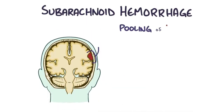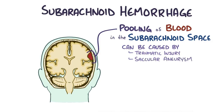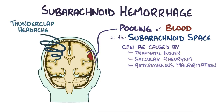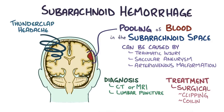As a quick recap: a subarachnoid hemorrhage is a pooling of blood in the subarachnoid space. It can arise due to a traumatic injury like hitting your head, a pre-existing saccular aneurysm bursting, or a pre-existing arteriovenous malformation that bursts. Usually there's a sudden and severe thunderclap headache described as the worst headache of a person's life. Diagnosis is usually done with a CT or MRI showing blood in the subarachnoid space and blood in a lumbar puncture. Treatment is done by surgical clipping or coiling.